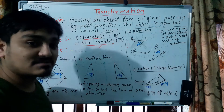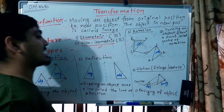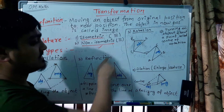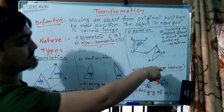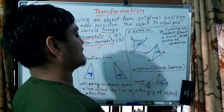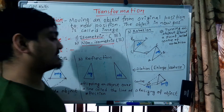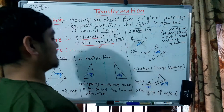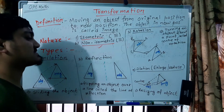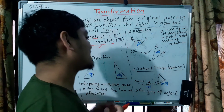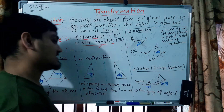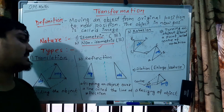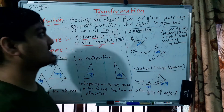There are basically four types of transformation: translation, reflection, rotation, and dilation or enlargement. In the context of transformation in mathematics, dilation includes both enlargement and reduction. These are the four types of transformation.